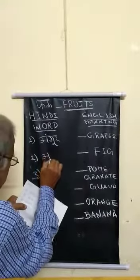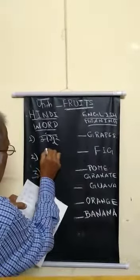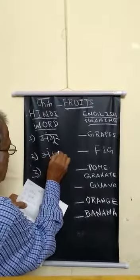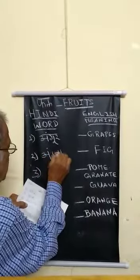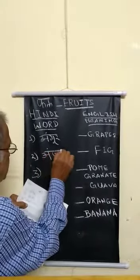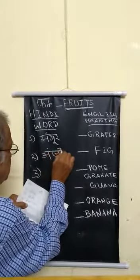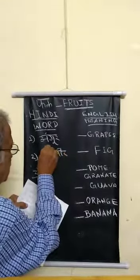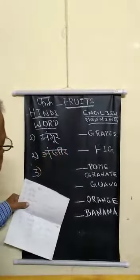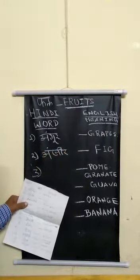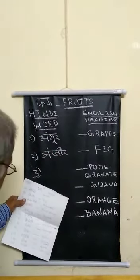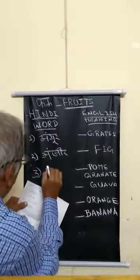Next is Anjir. A, G, Ra — Anjir. Anjir means fig.